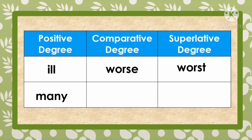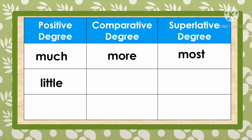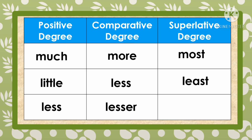Continuing irregular comparisons: 'much' — comparative degree: 'more'; superlative degree: 'most.' The word 'little' — comparative degree: 'less'; superlative degree: 'least.' And 'less' — comparative degree: 'lesser'; superlative degree: 'least.'